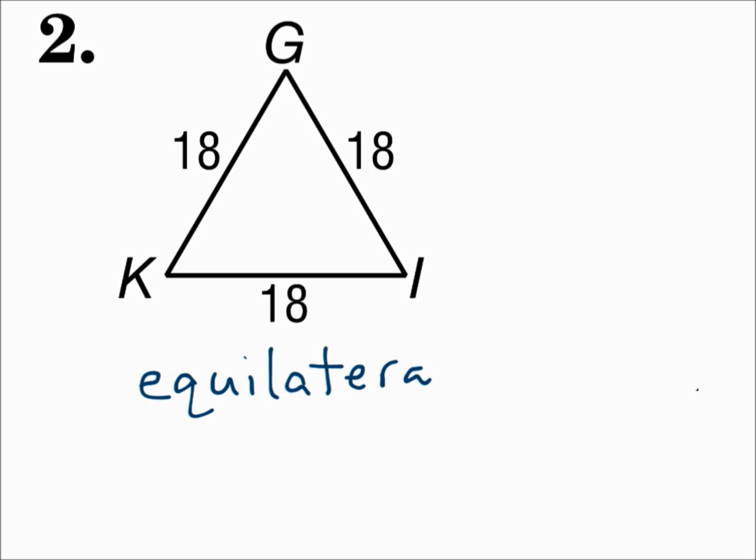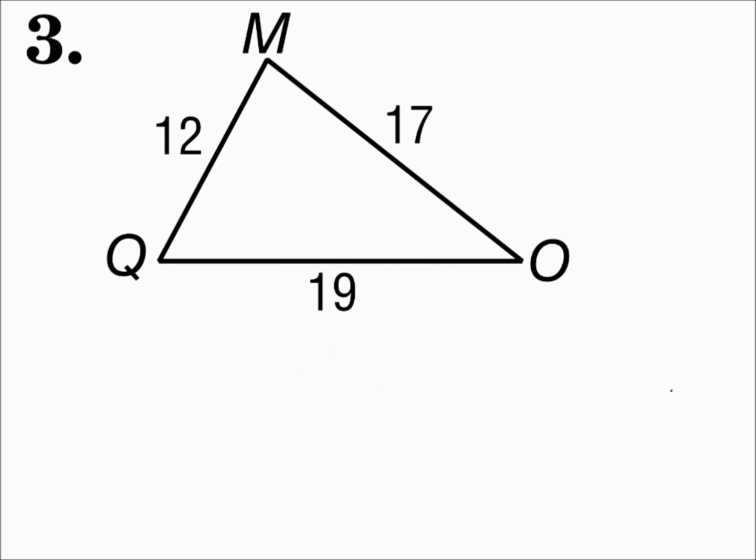Remember, equilateral triangles are also isosceles, because at least two sides are congruent. Number three — all sides are different, so it's a scalene triangle.